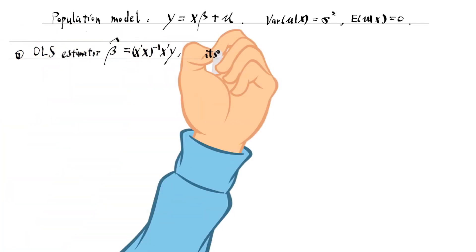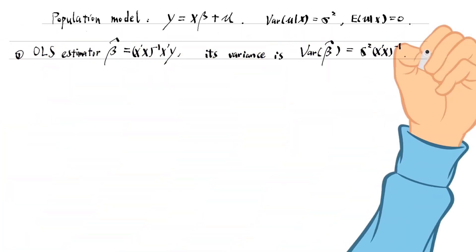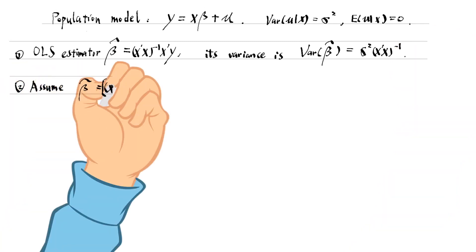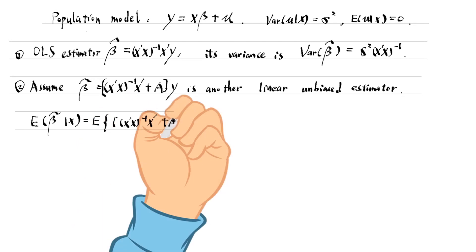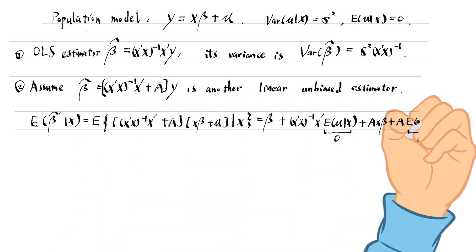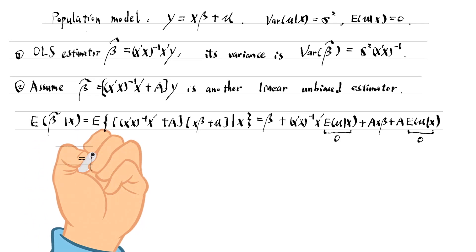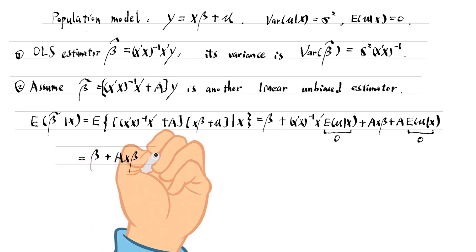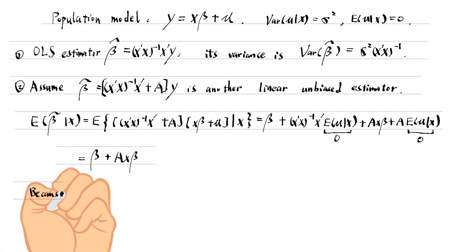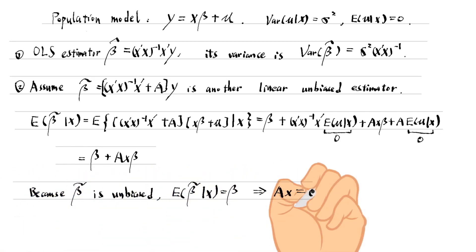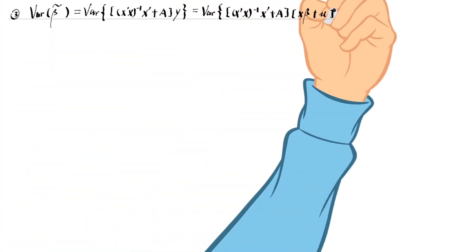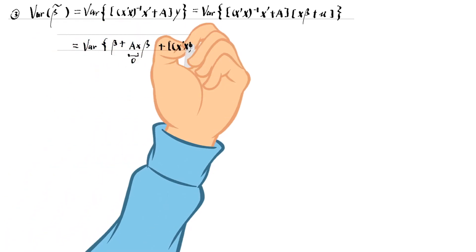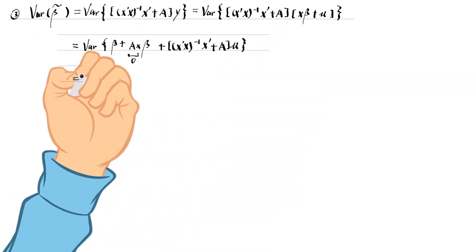Let me show you why the OLS estimator is the best linear unbiased estimator of the population coefficient under the Gauss-Markov assumptions. In step one, we write down the variance formula of the OLS estimator beta hat. In step two, we assume that beta tilde is another linear unbiased estimator. Since it is unbiased, the expected value of beta tilde equals beta, so the product of a and x equals zero. In step three, we write down the variance of beta tilde and finally show that it is greater than the variance of beta hat.